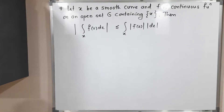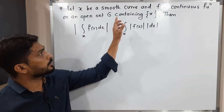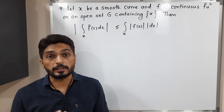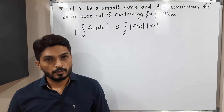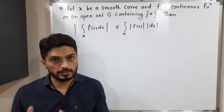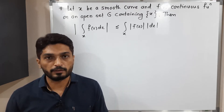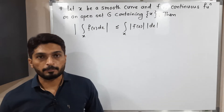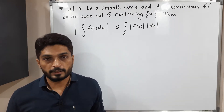Hi everyone, let us discuss this result. We have a curve x, which is a smooth curve, and we have a function f which is continuous on an open set g. So g is an open subset of C, and g contains that curve x. That is a very important thing. We now have to prove this inequality.